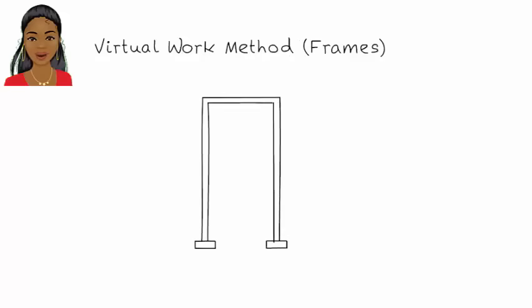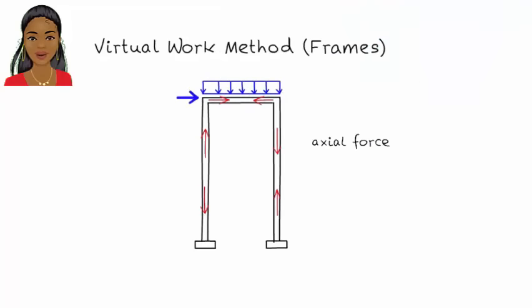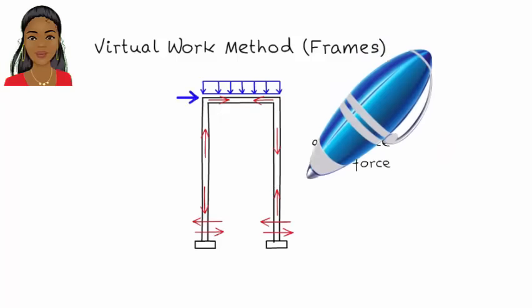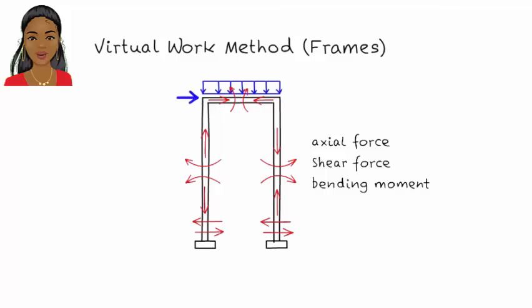Frames are structural systems consisting of two or more elements. The type of loads applied to frames often subject the structural elements to axial force as well as shear force and bending moment. Therefore, a frame member should be viewed as a beam and a truss element at the same time.